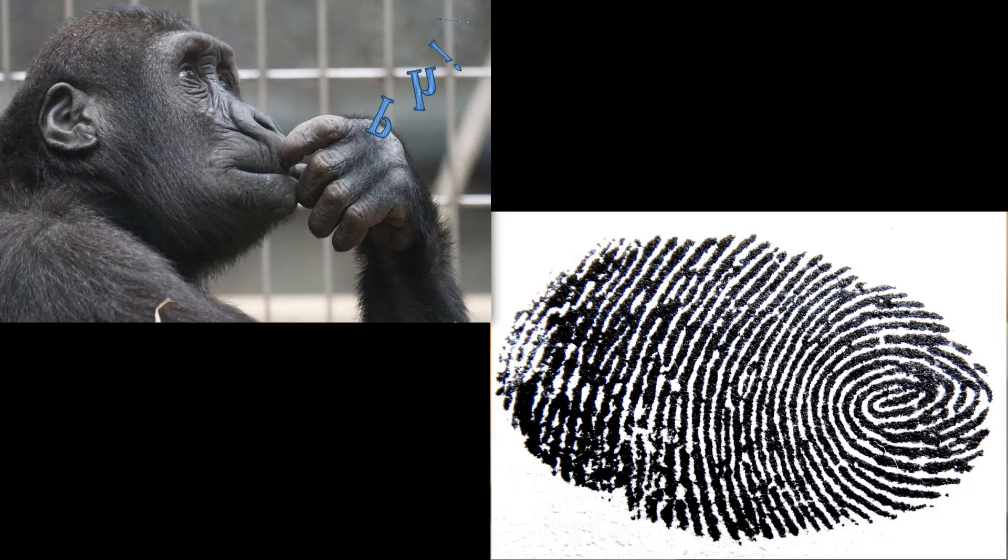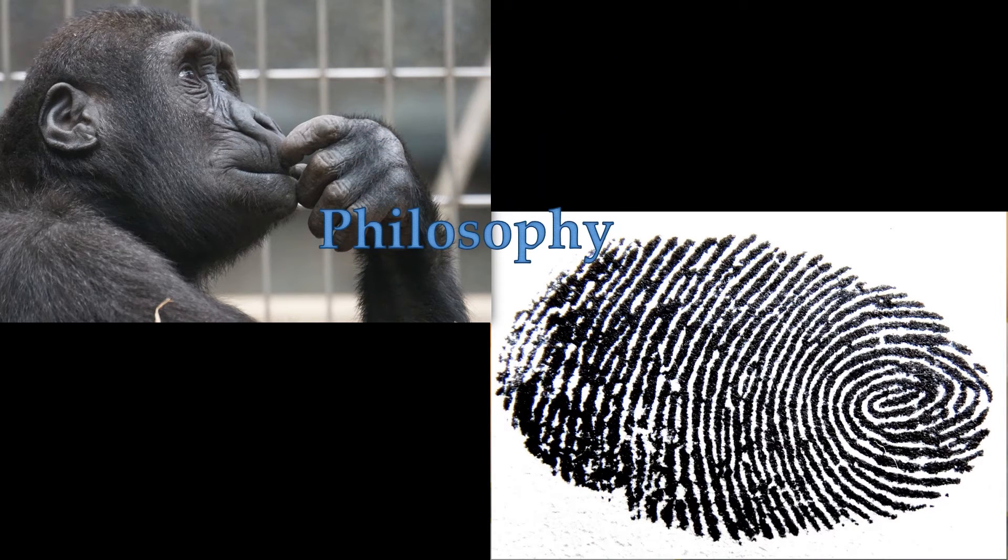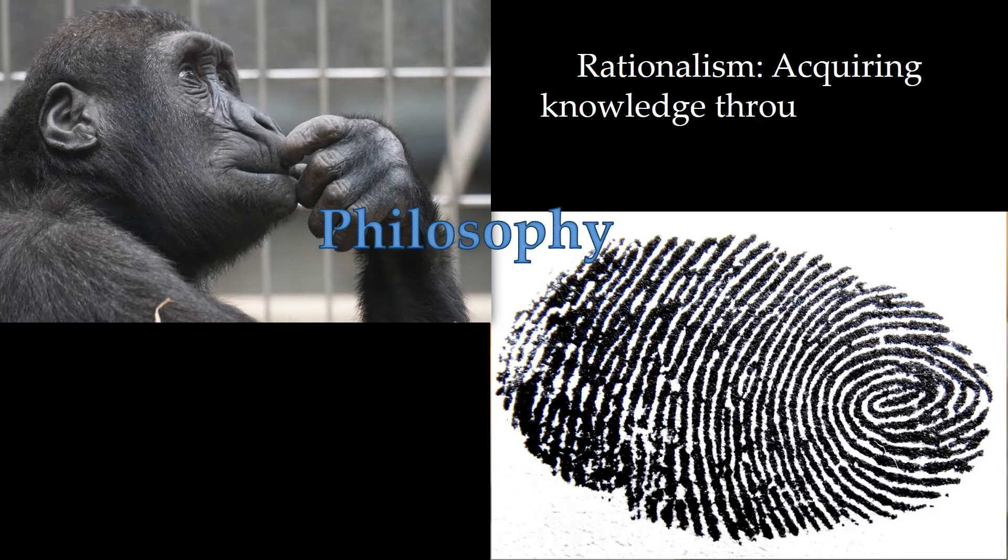This leads us to the two branches of philosophy. The first branch is called rationalism, which is acquiring knowledge through rational thought, thinking through the problem.